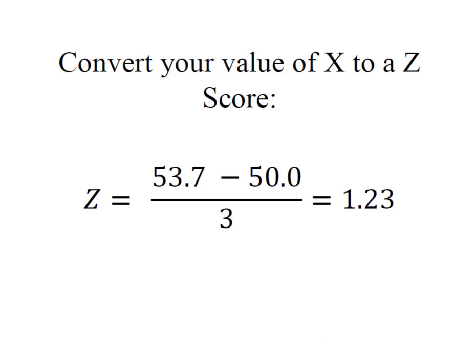The first thing we have to do is convert that value of x to a z-score. We're simply going to do that by taking x minus the mean divided by the standard deviation to come up with a z-score of 1.23.